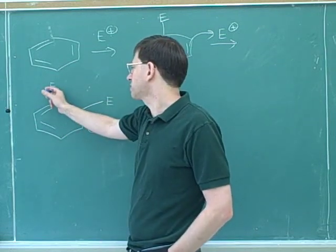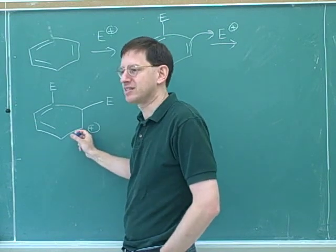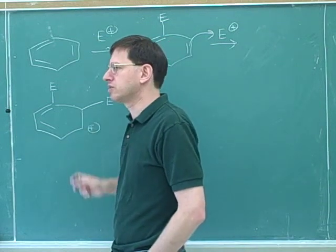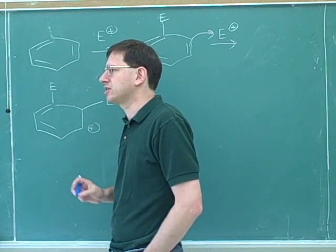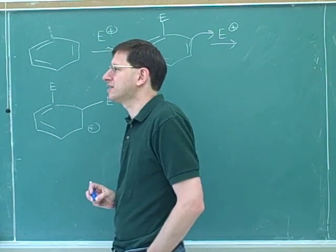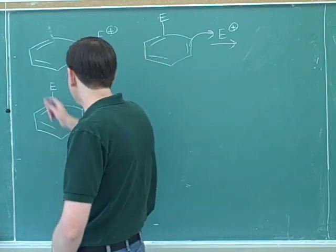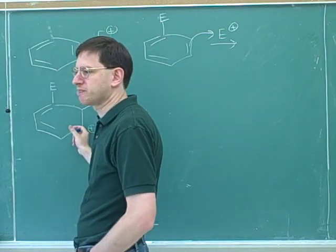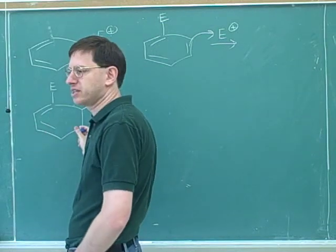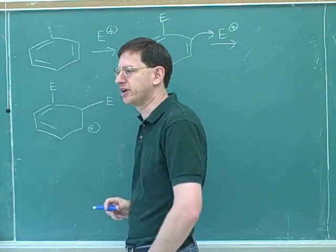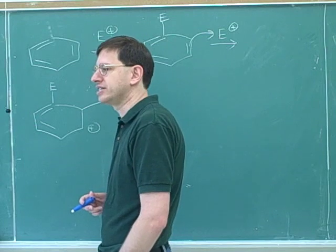How could the first substituent stabilize this intermediate? By being electron donating, because the intermediate has a positive charge. Since the intermediate will have a positive charge, an electron donating first substituent will help stabilize that positive charge, making the whole reaction easier. An electron withdrawing substituent destabilizes the positive charge, making the reaction harder. That's why electron donating substituents are activators and electron withdrawing substituents are deactivators.